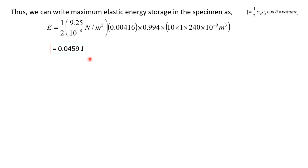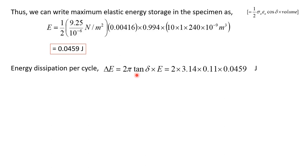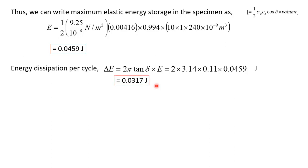This is one of the solutions we had to find. Now we can calculate the energy dissipation per cycle, which is given as delta E equals 2 pi times tan delta multiplied by E. Using 2 times 3.14 for pi, tan delta is 0.11, and the value of E is 0.049 joule as just calculated. This gives delta E equal to 0.0317 joule.